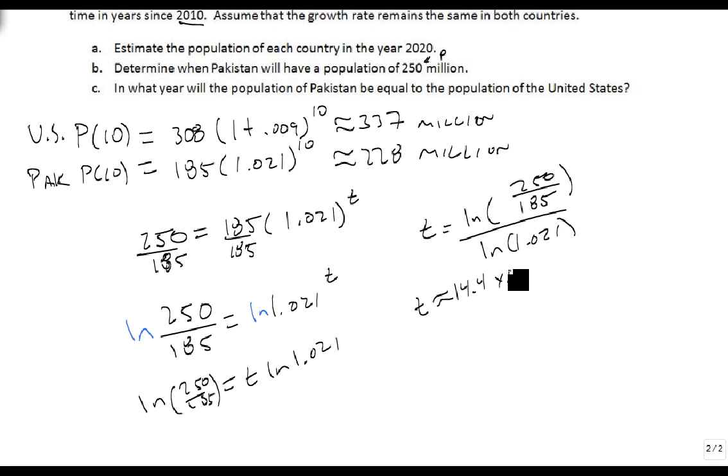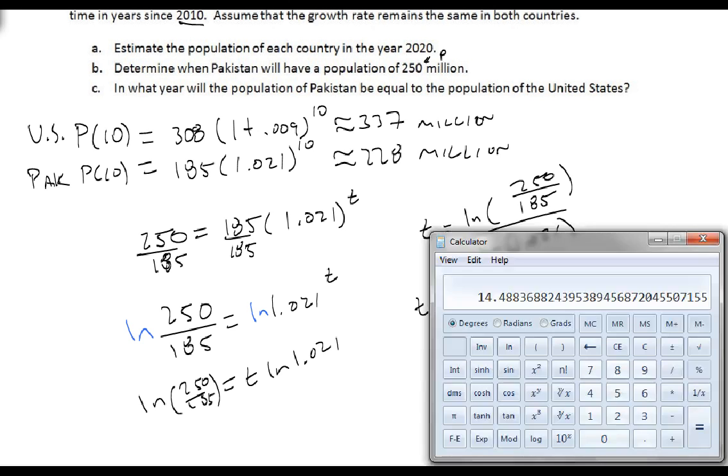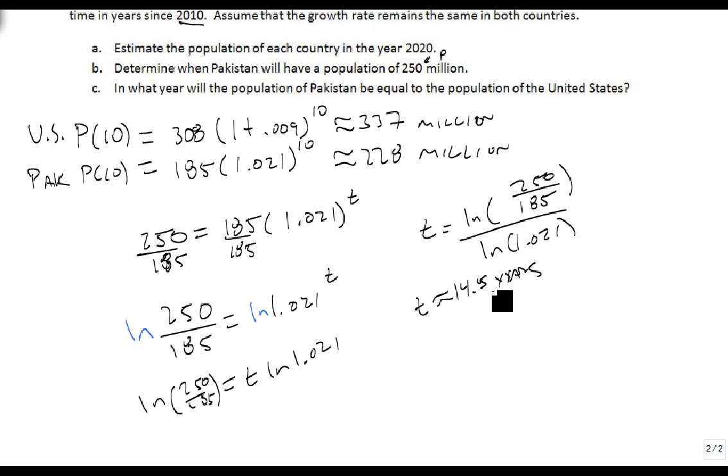Let's do 14.5, or in other words, it'll be the year 2010 plus 14.5 is 2024.5, so it'll be sometime in the year 2024. So that's when Pakistan will have a population of 250 million.